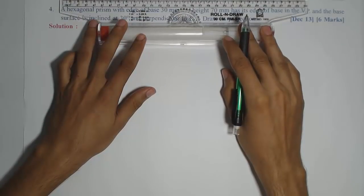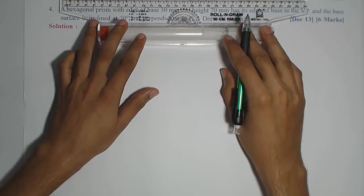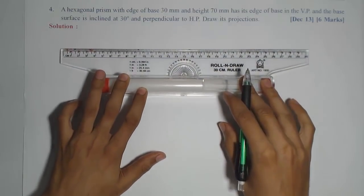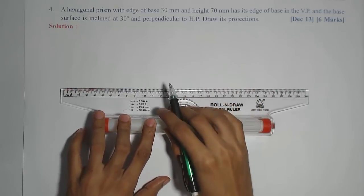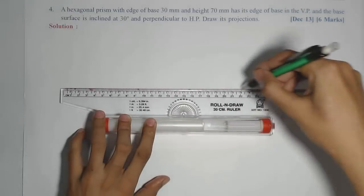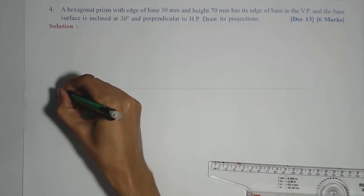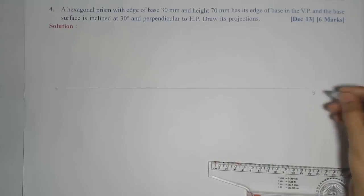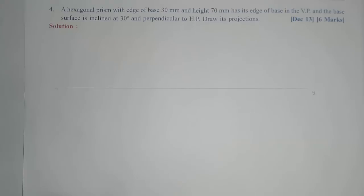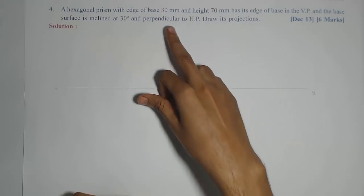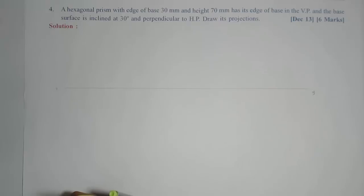Now here we need to leave more space below the reference line, just the reverse of the previous problems. So after drawing the XY line, I will first draw the hexagon. Here we will follow the circle method. In the previous problem we followed the 120-degree angle method, but here we will follow the circle method for drawing the hexagonal base.